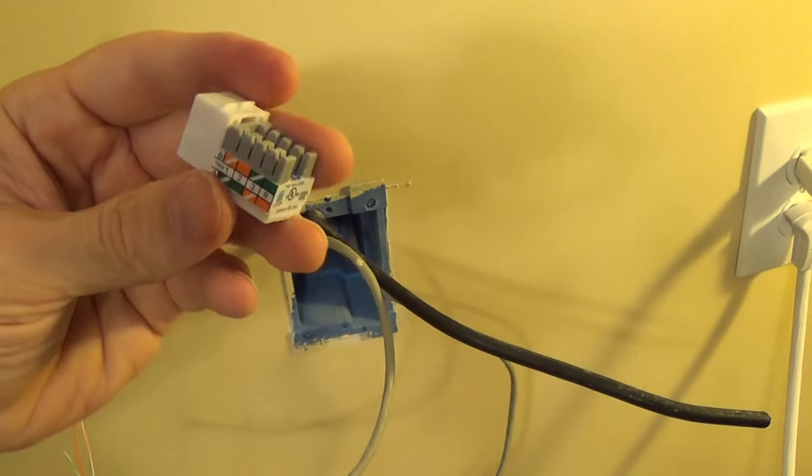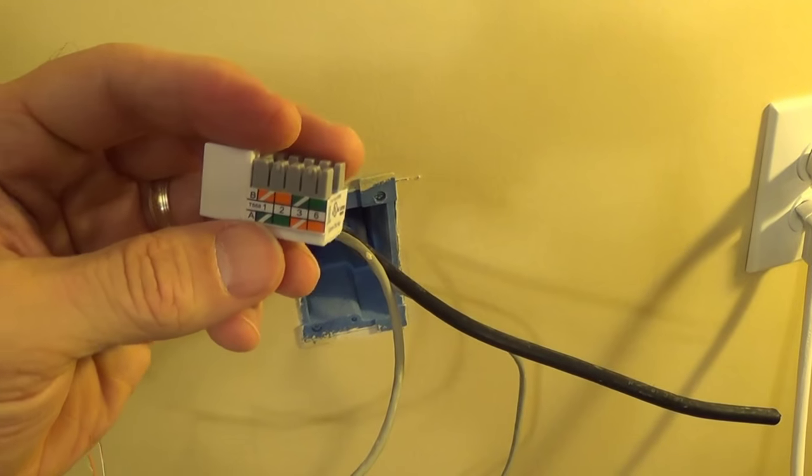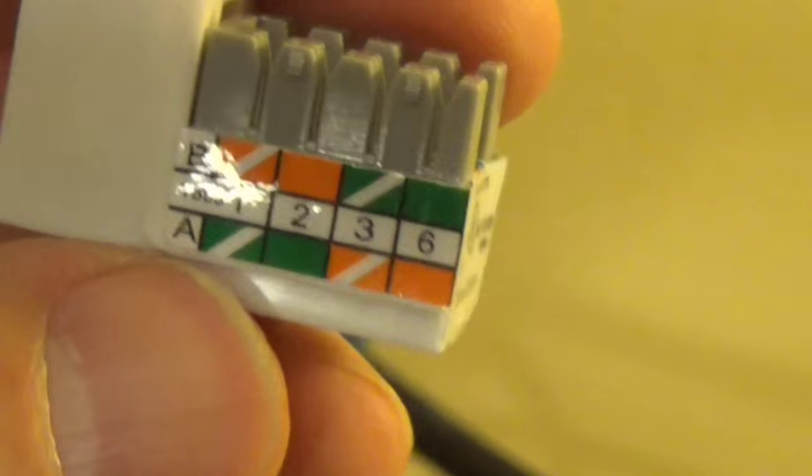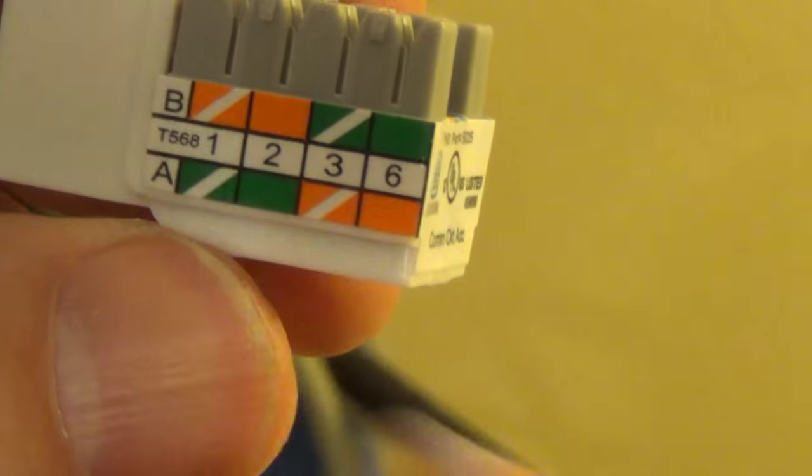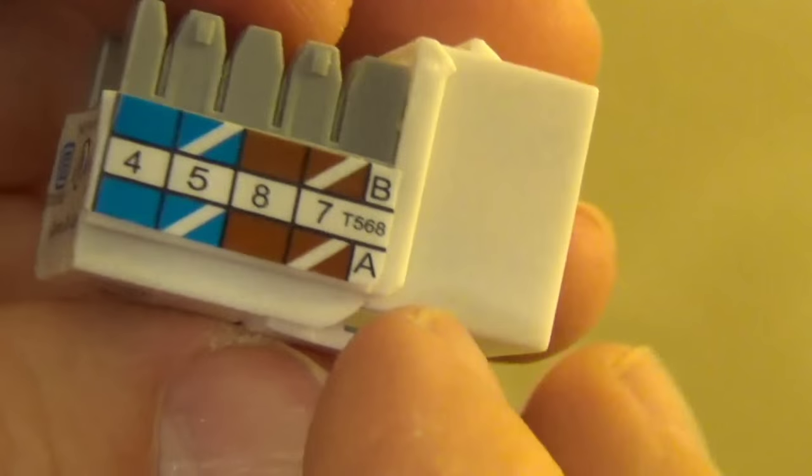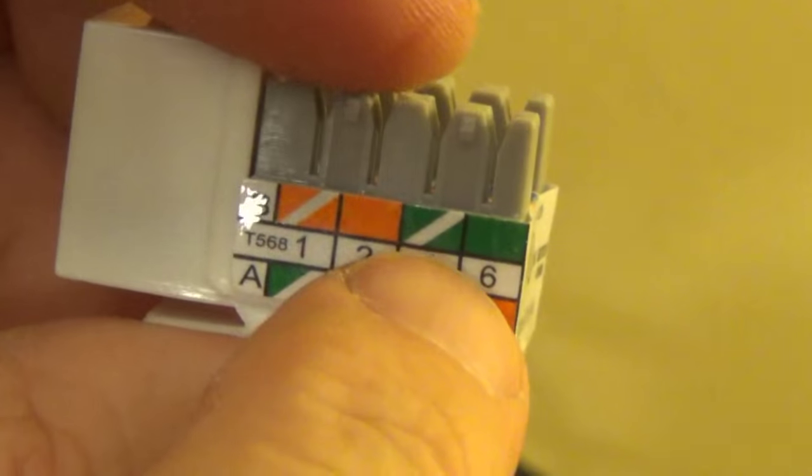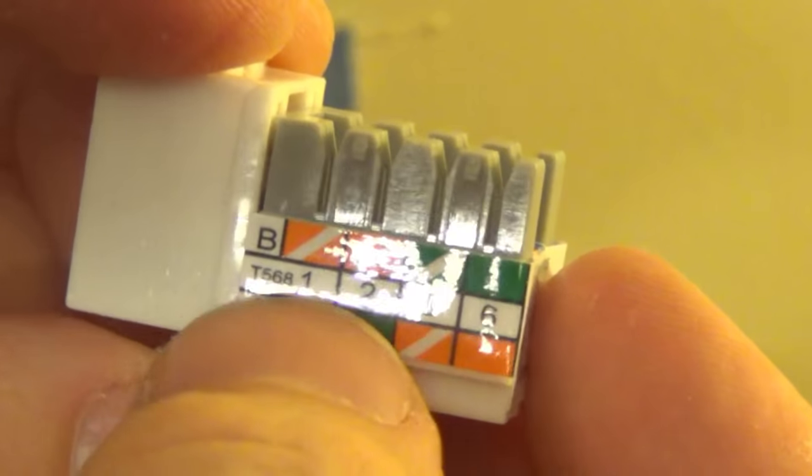Now looking at the jack itself, there's some color coding on the side. Let me try to zoom in here so you can see. You see an A and B, and you also see some on the other side as well, A and B. We're interested in the B. That's the most standard type of internet wire out there.